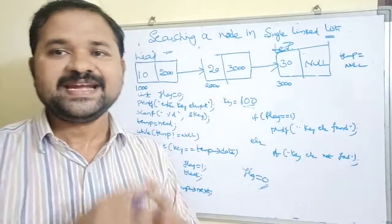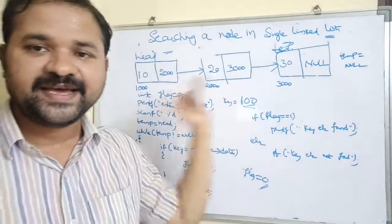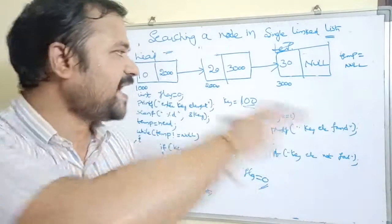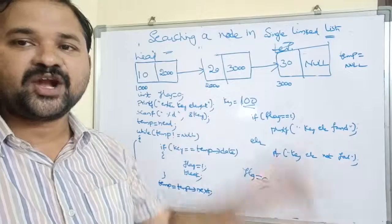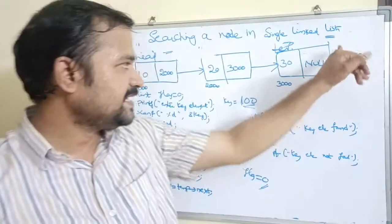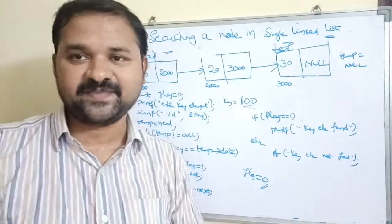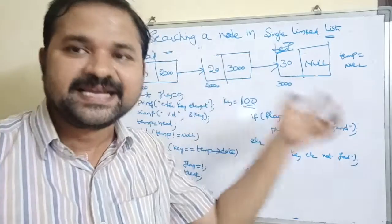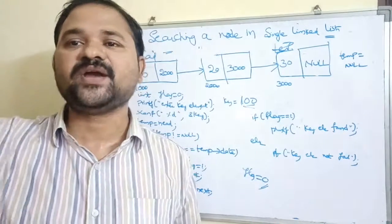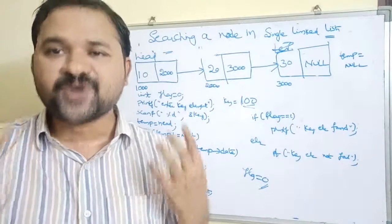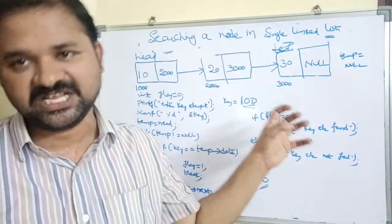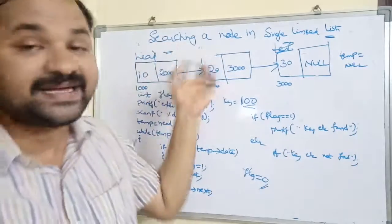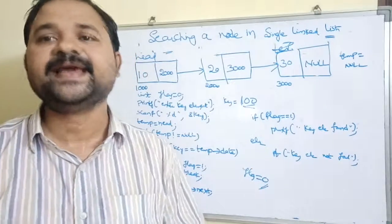It is not possible to perform a search operation using binary search on a single linked list — we must always use linear search only. In binary search, we divide the list into two parts using low, high, and mid pointers, but that is not possible in a linked list. Binary search can only be performed on arrays. For searching a node in a single linked list, we must always use linear search.